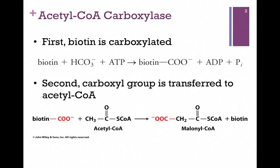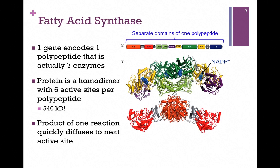Now we're ready to actually begin fatty acid synthesis. This process is carried out, believe it or not, by a single polypeptide — fatty acid synthase, the most impressive of all enzymes. One gene encodes one polypeptide that is actually seven enzymes. The protein is a homodimer with six active sites per polypeptide, that's 12 per dimer, and the size is 540 kilodaltons.